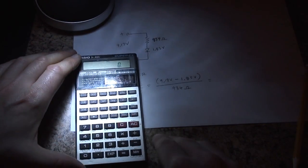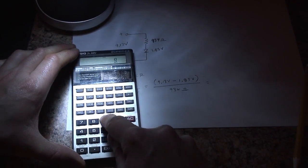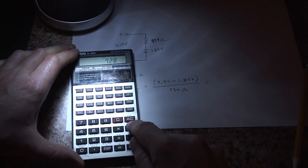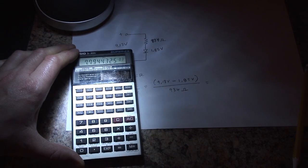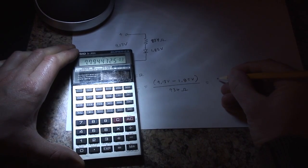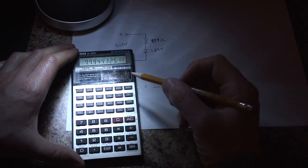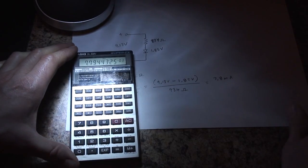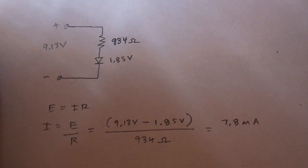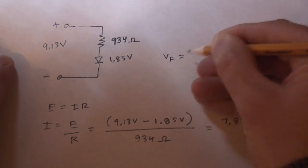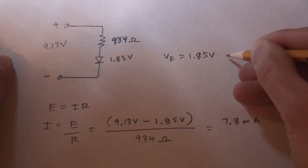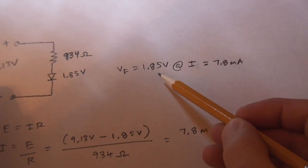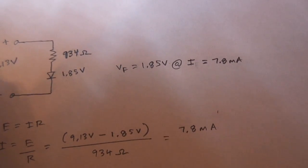So now this is just simple arithmetic, 9.13 minus 1.85 divided by 934. And this answer is in milliamps, so that would be 7.8 milliamps. So for this red LED, we know that the forward voltage is 1.85 volts when current is 7.8 milliamps.